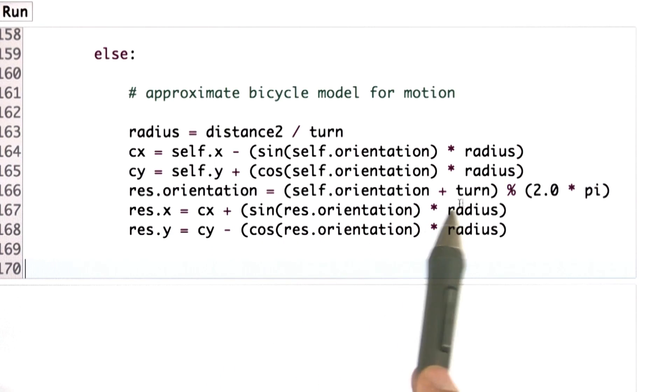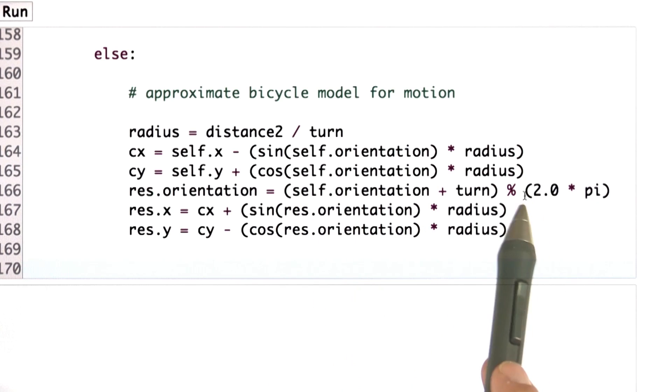I now first change the orientation to be the new orientation by adding turn to the old orientation modulo 2pi, and then I plug the new orientation into the sine and cosine argument, multiply by radius, add to the center of the circle to get my result. So this routine over here gives me exactly what I wanted.